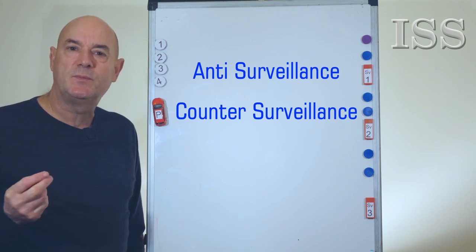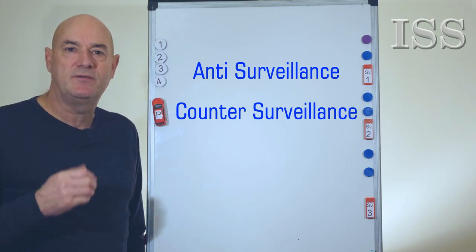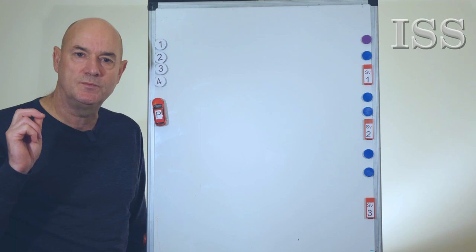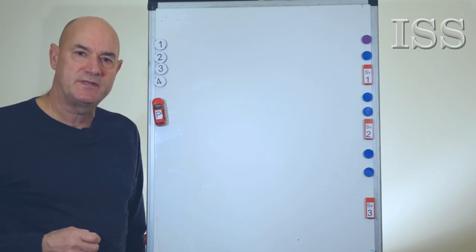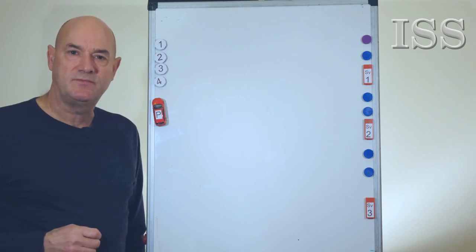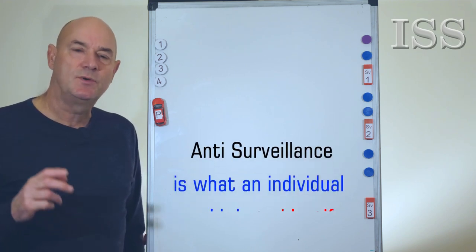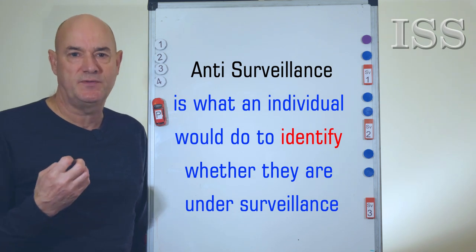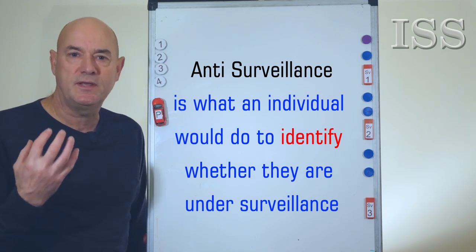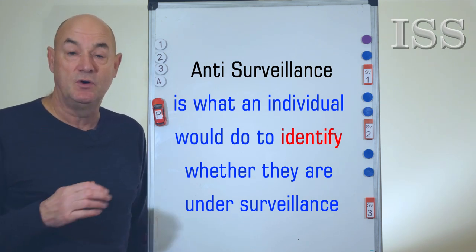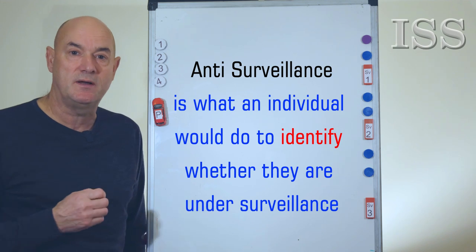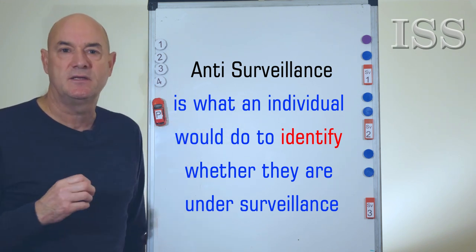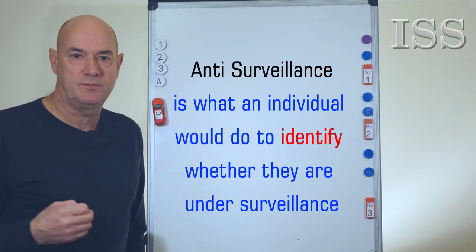The two disciplines are very different, although they are both still forms of surveillance detection. Anti-surveillance is what you would do, or what I would do, if we think we're going to be followed, or we think we're going to be put under surveillance, or we suspect that we are. It's what we would do in order to detect any watchers or followers.